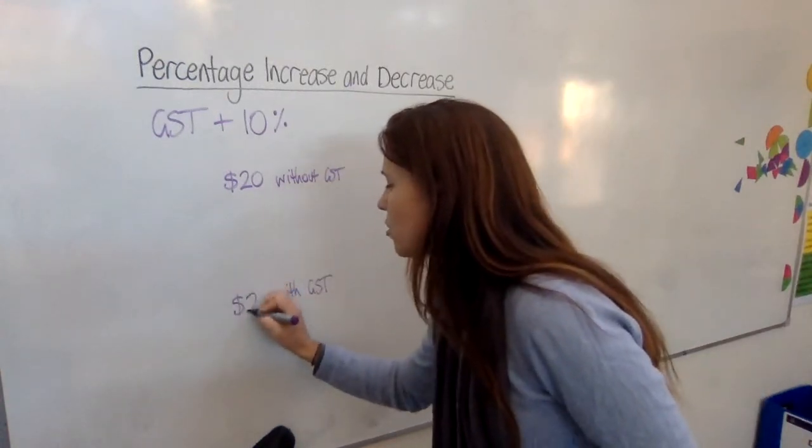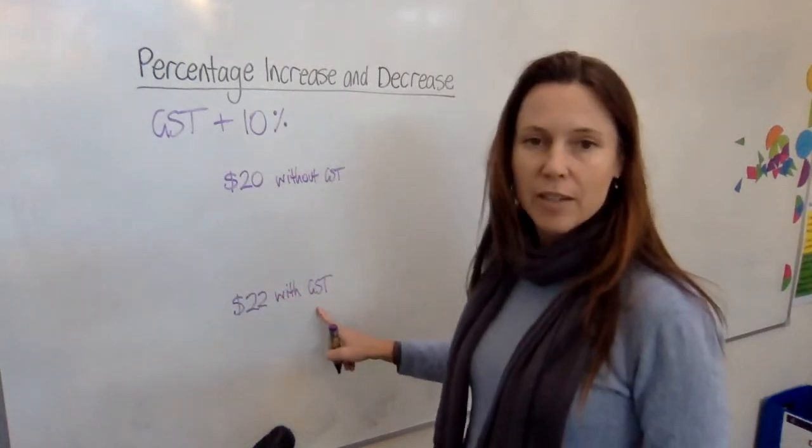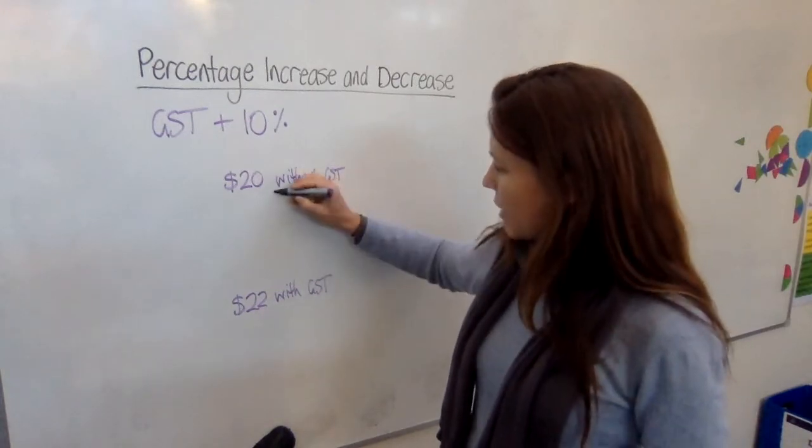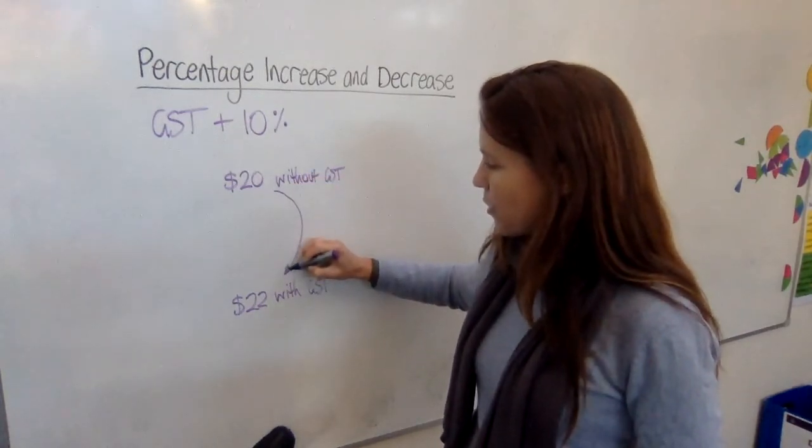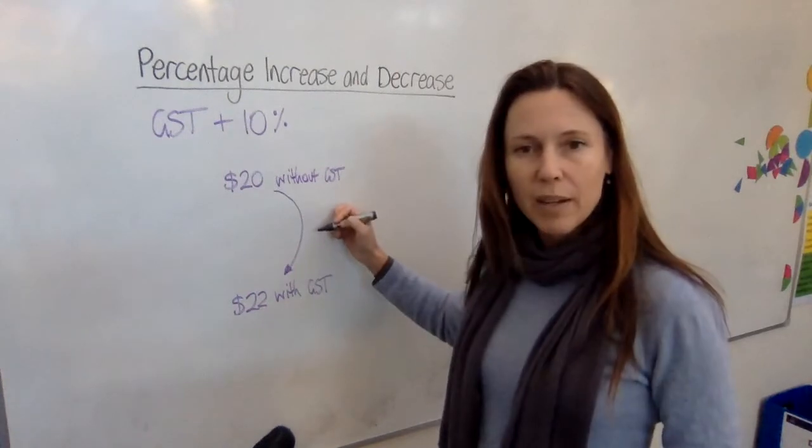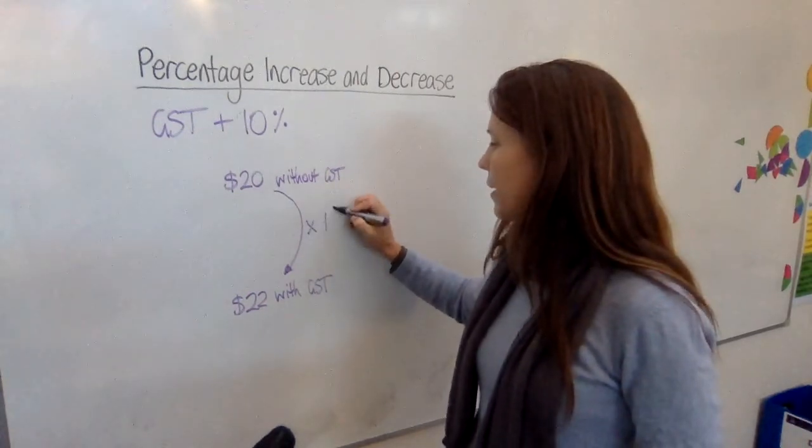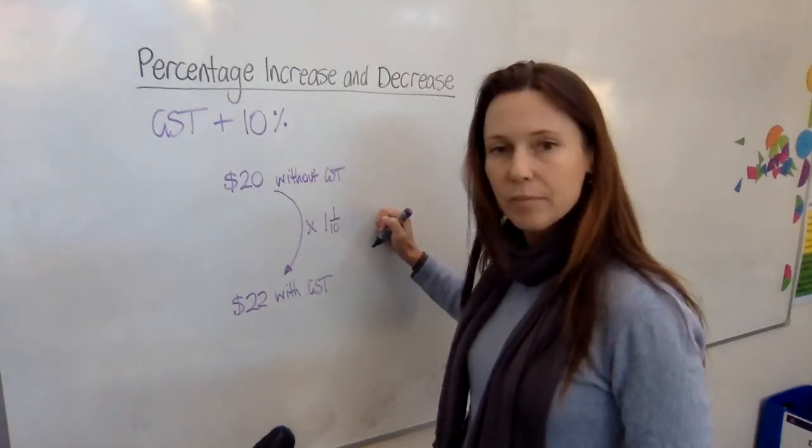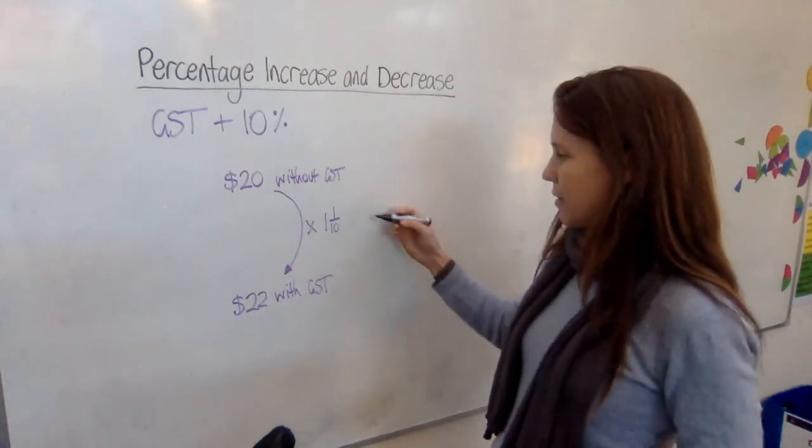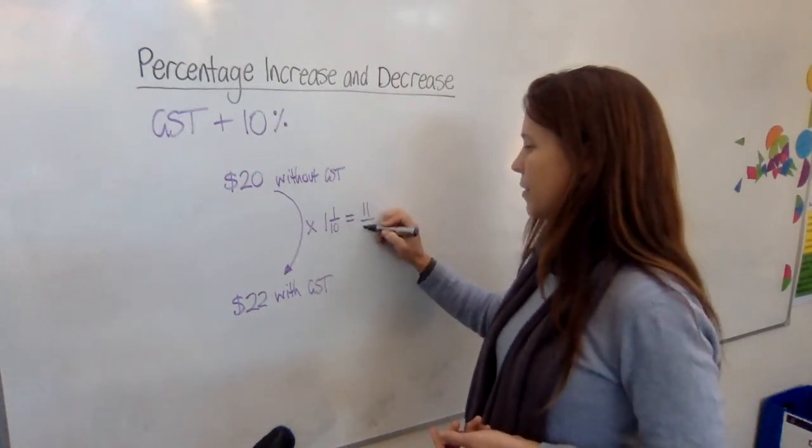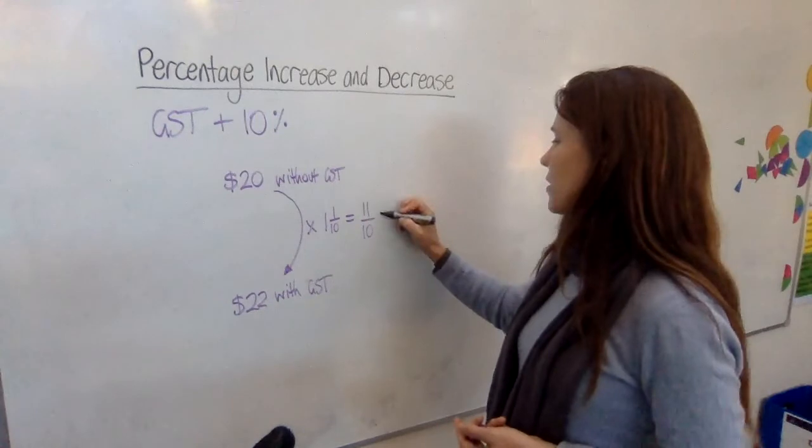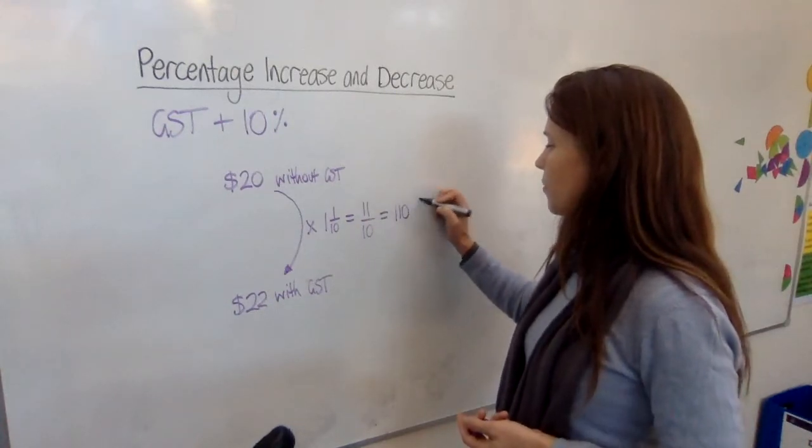So it'll cost $22 with the GST. Now, we've added $2, but if you looked at it as what we multiplied it by, we multiplied it by one and a tenth, didn't we? Which is the same as 11 tenths, which is the same as 110%.